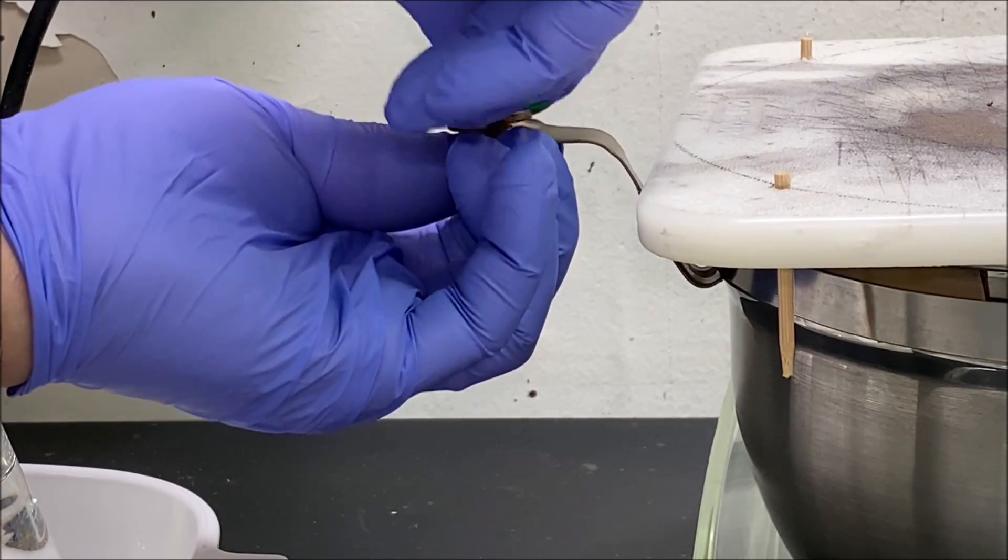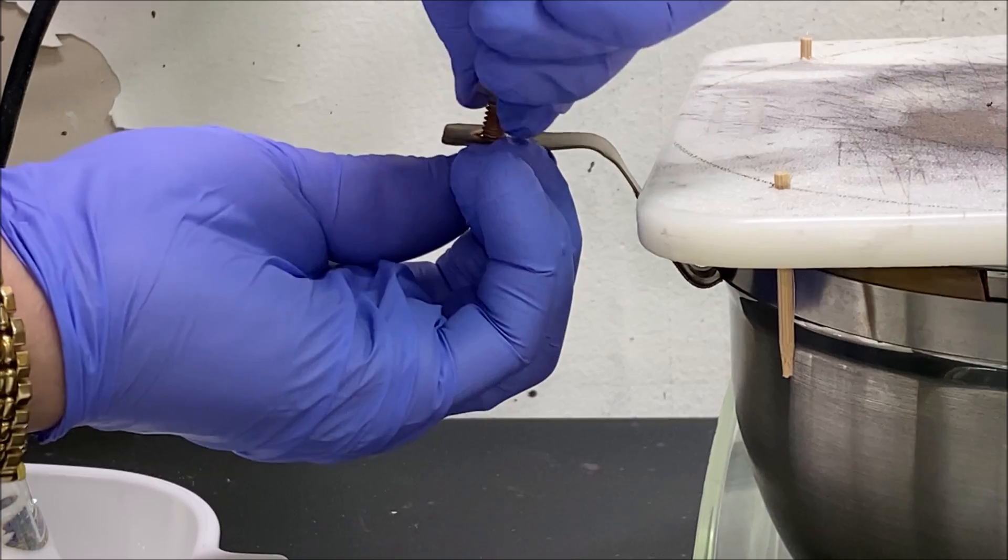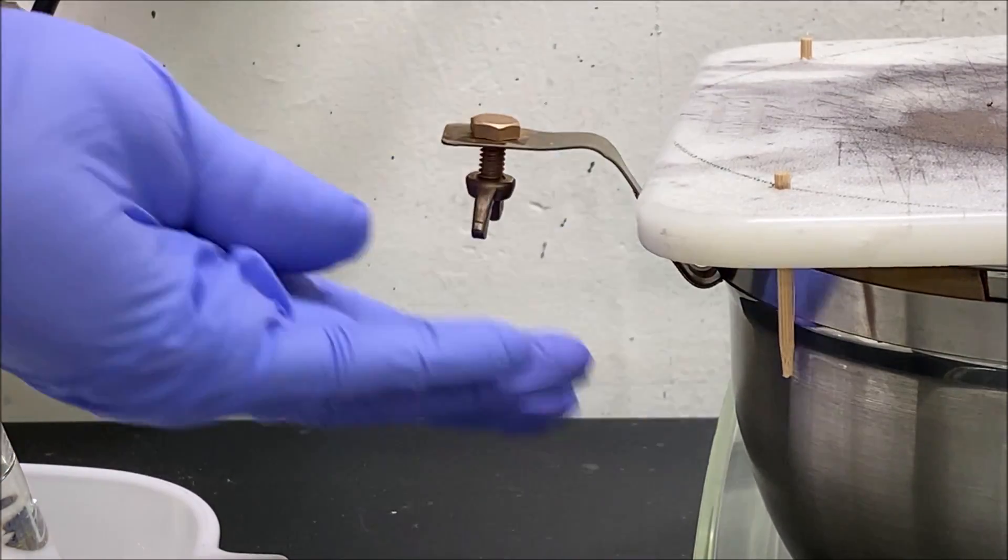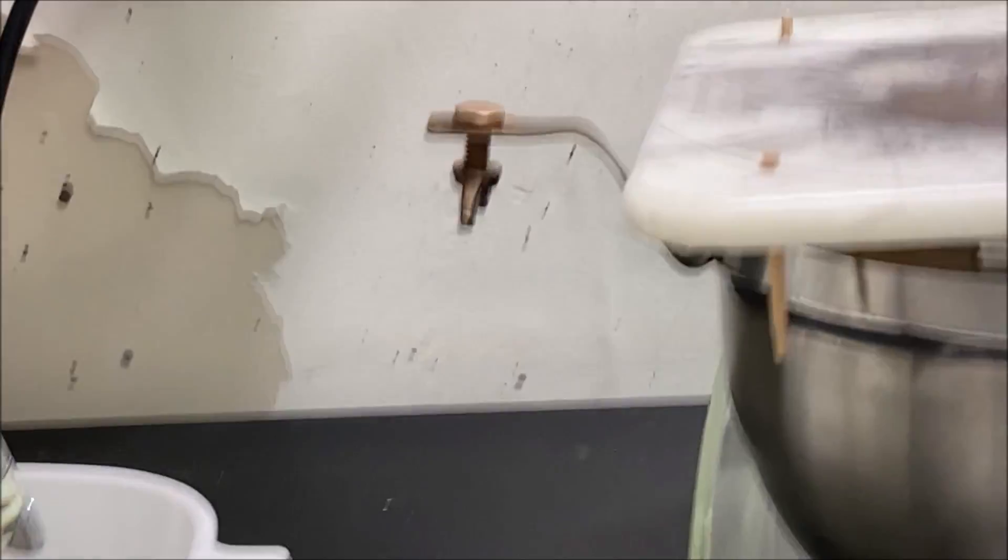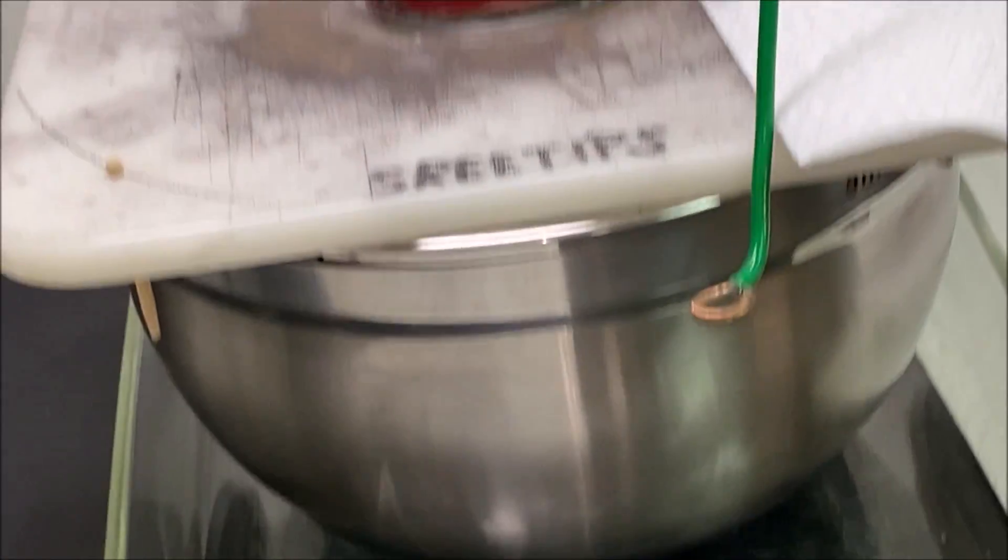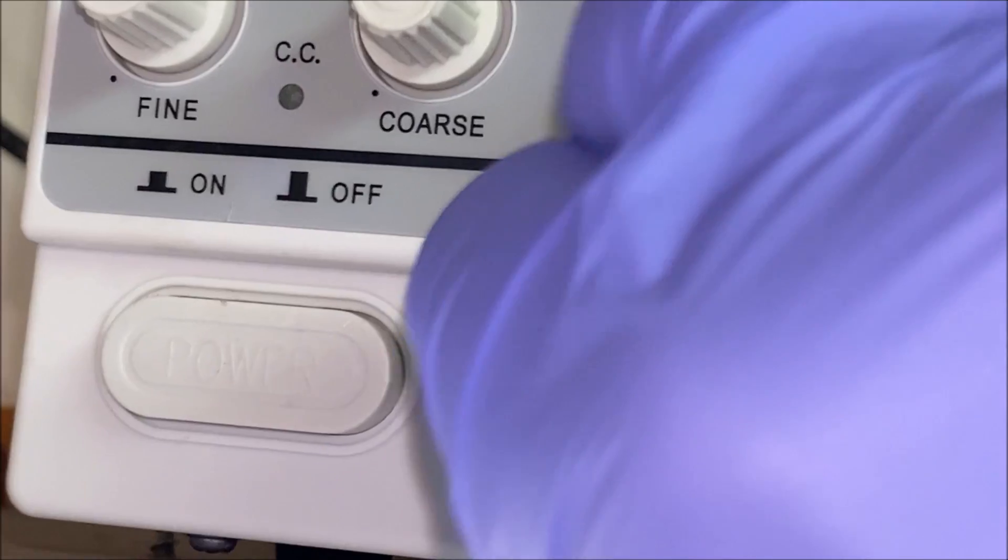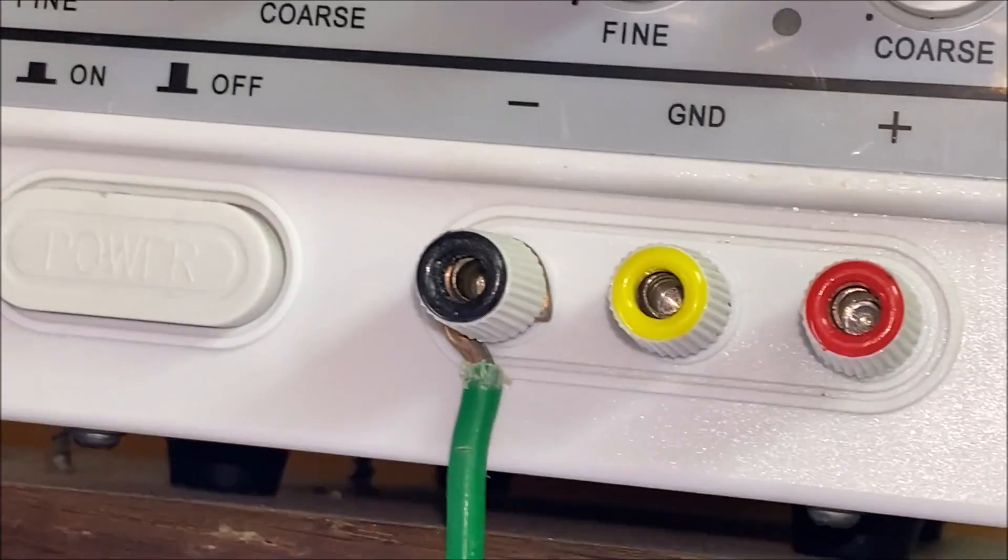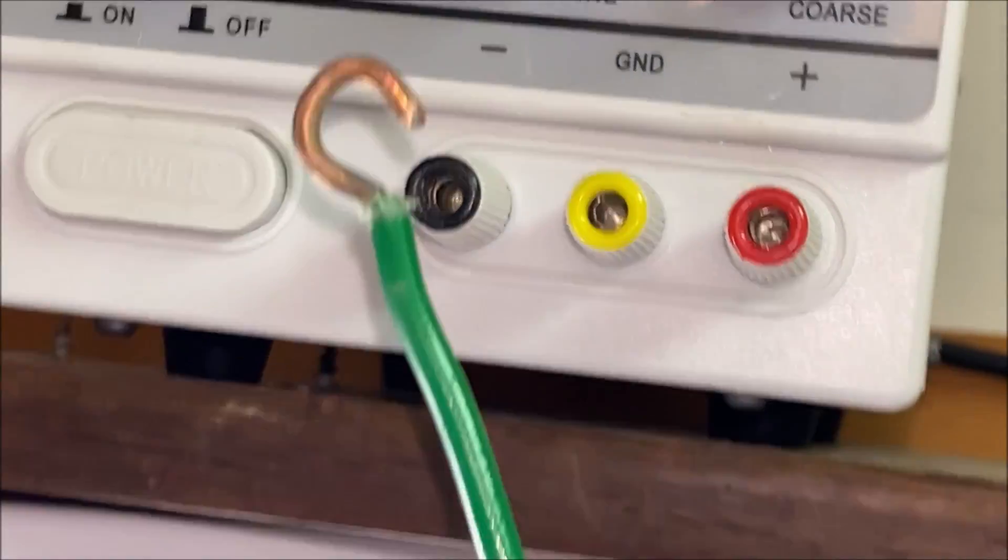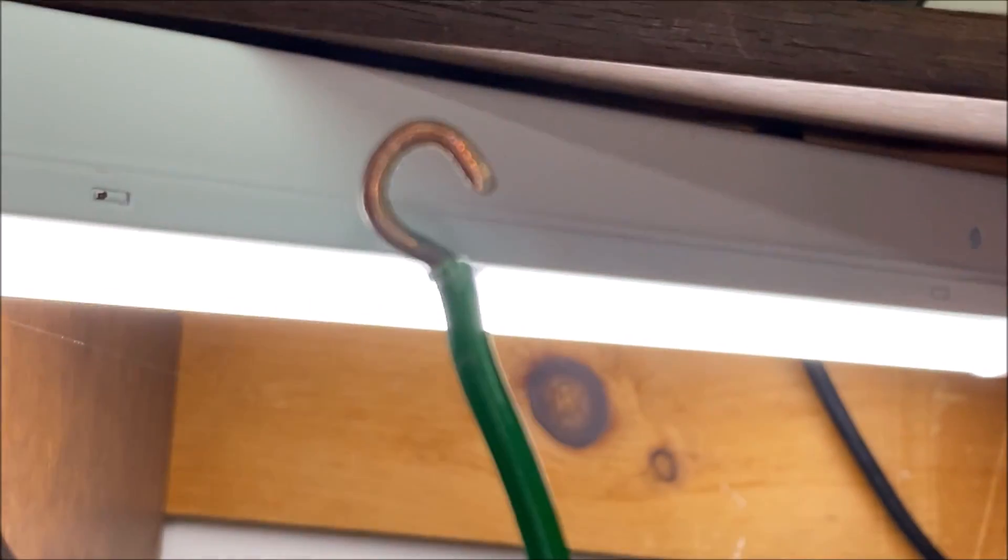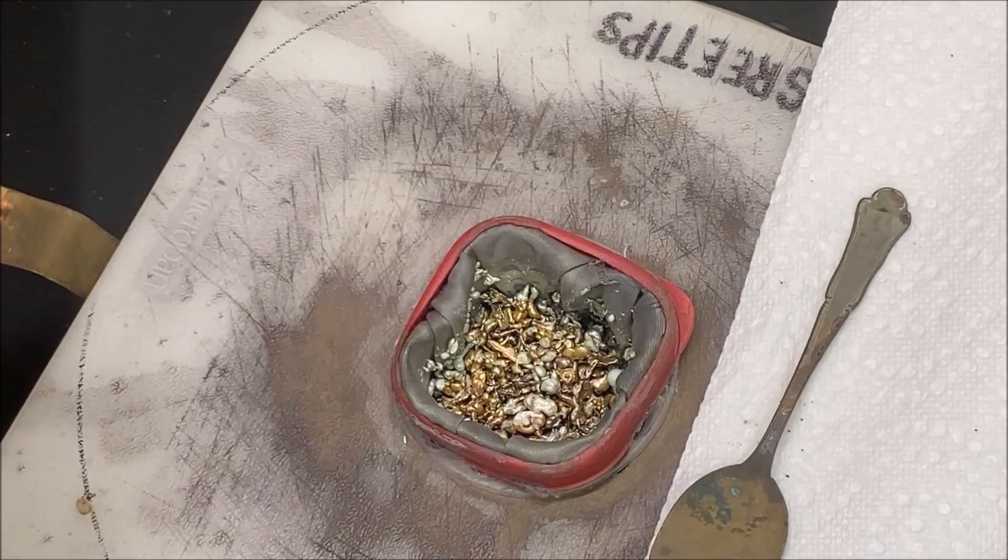Now what we'll do is reach up here and disconnect it from the power supply. Then I'll put this up and get it out of the way. I will remove the anode basket.